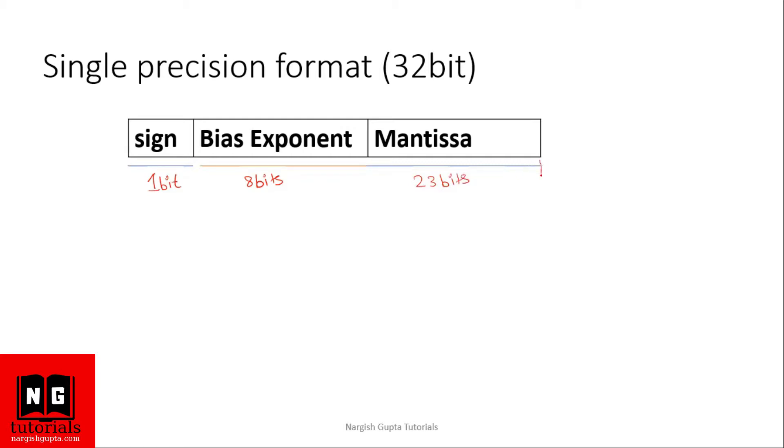Here the value of the bias will be, as we know that the formula is 2 to the power n minus 1 minus 1, and here n is 8. So we will have 2 to the power 8 minus 1 minus 1, that is 2 to the power 7 minus 1 which will be 127.